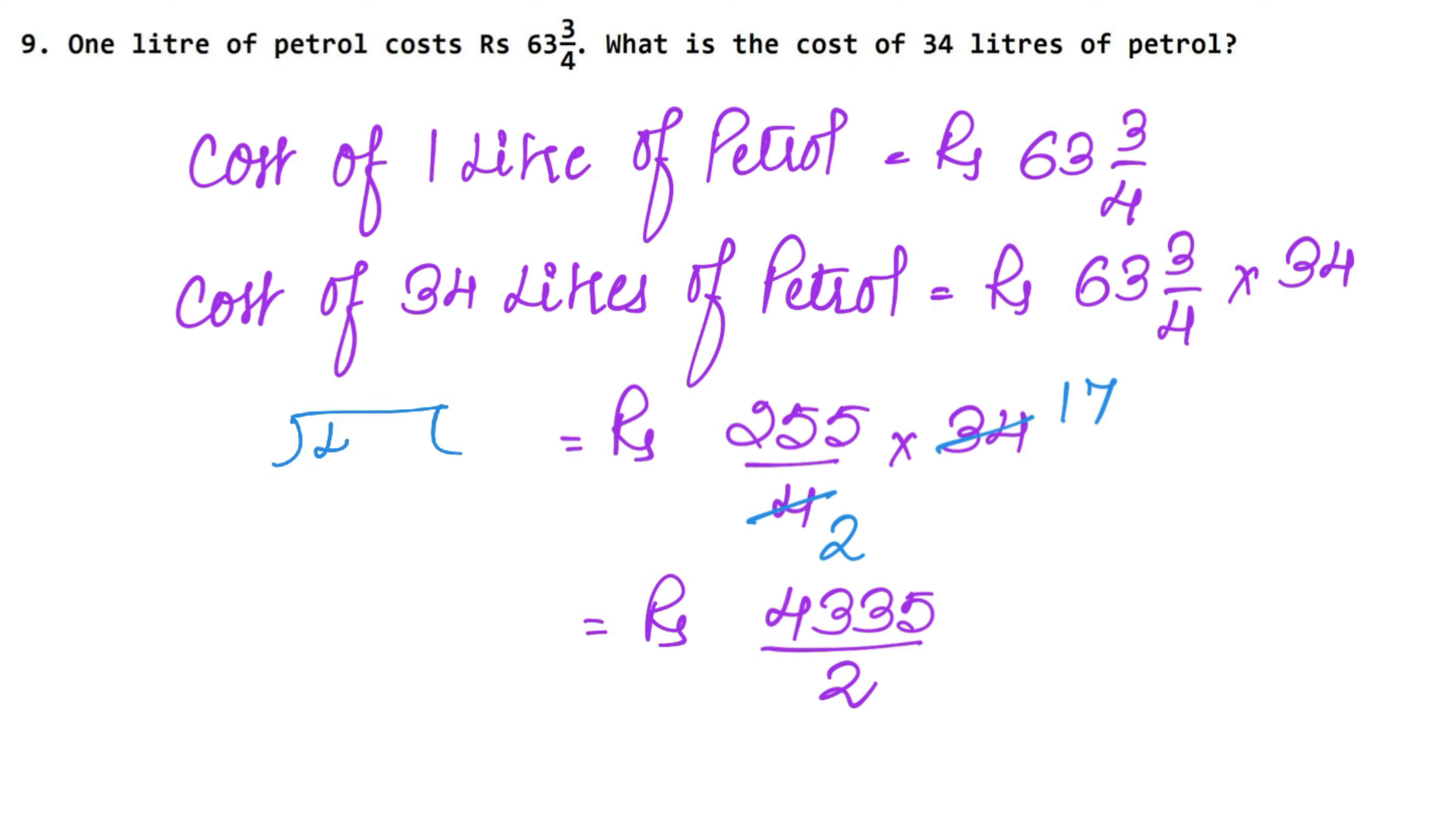Now we will divide it in the mix fraction. So see, 4, 3, 3, 5. So we will divide it in the mix fraction. 2, 2's are 4. 3, 2, 1's are 2. Again, 1, 3, 3. 2, 6 are 12. 1, 5, 5. 2, 7's are 14 and 1 remainder. So what can we write in the mix fraction? 2, 1, 6, 7 hole 1 upon 2 rupees. 34 liters of petrol.